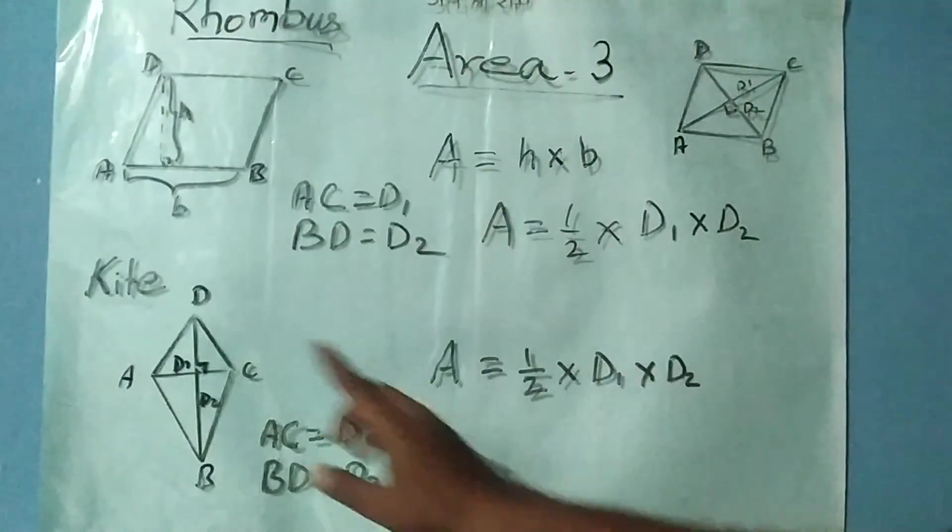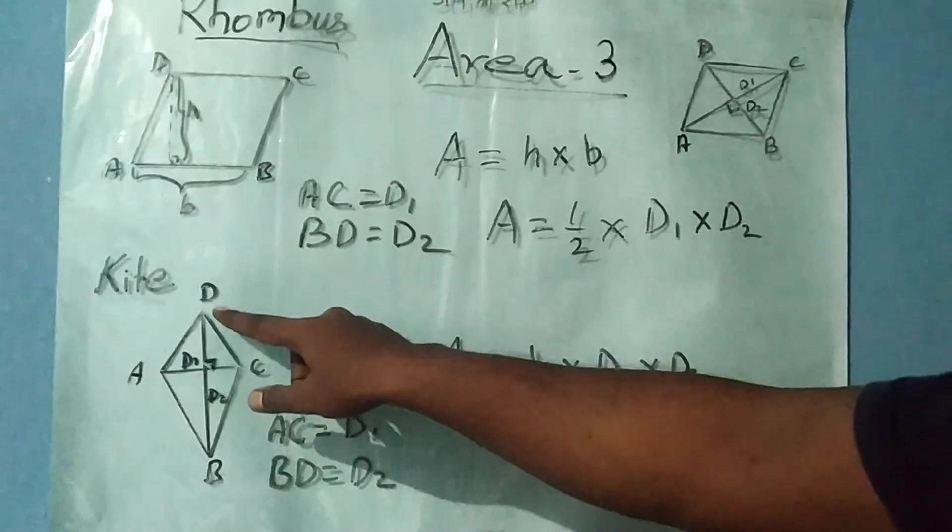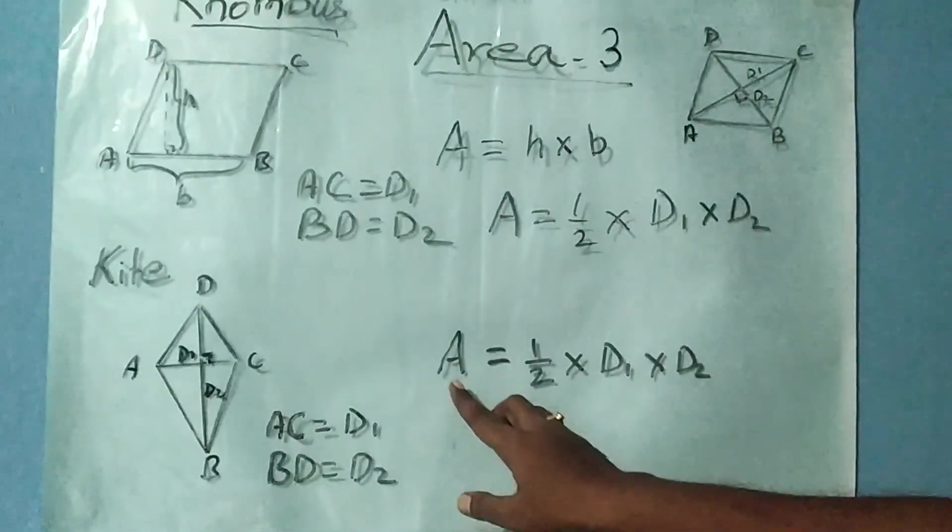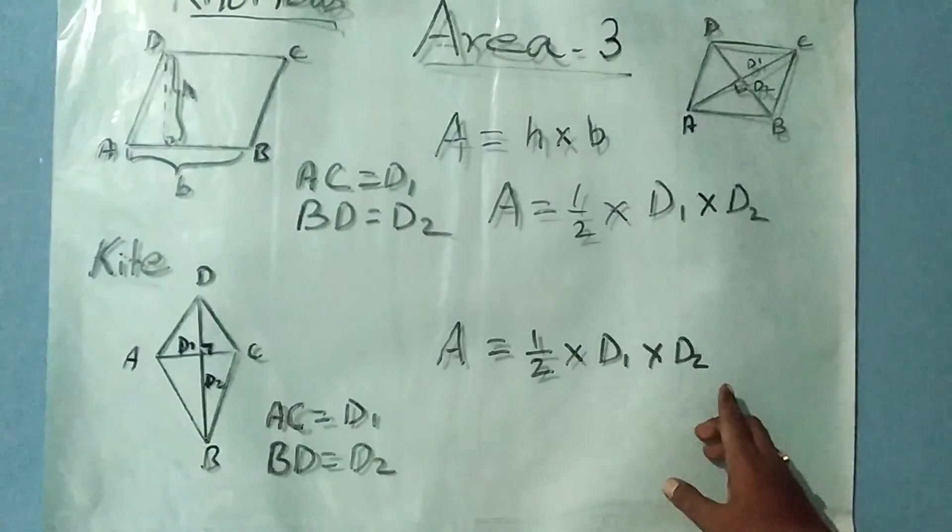In case of kite, the same formula can be applied. If we know the length of the diagonals, area will be half × D1 × D2.